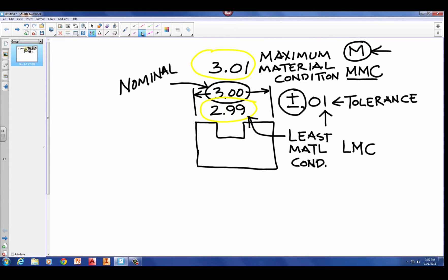When we add our tolerance to the nominal, we find our maximum material condition in this case. And when we subtract our tolerance from the nominal, we get to 2.99, which is our least material condition.